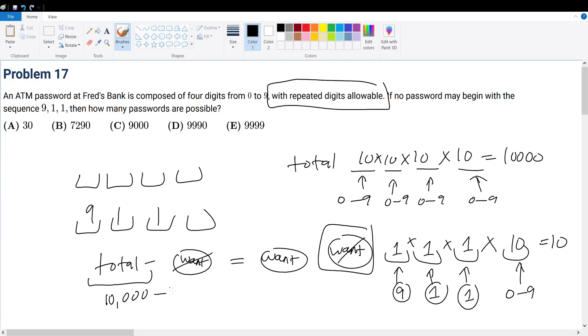So in other words, our final answer would be the 10,000 total minus the ones that we don't want, which is 10, to get 9, 9, 9, 0. So your final answer would be answer choice D.